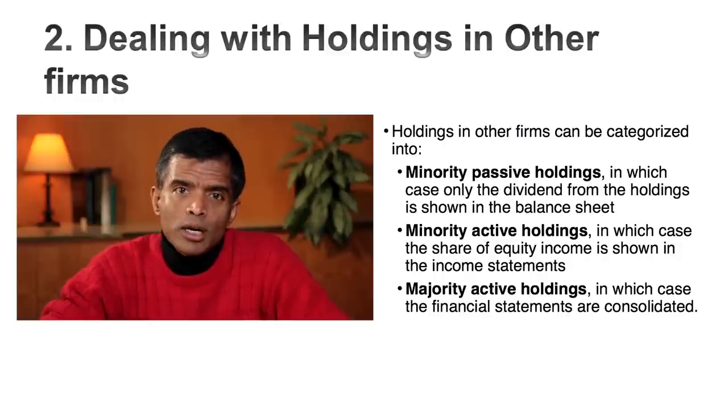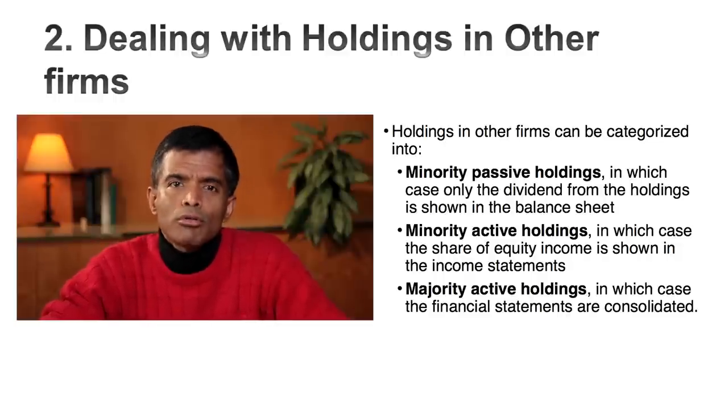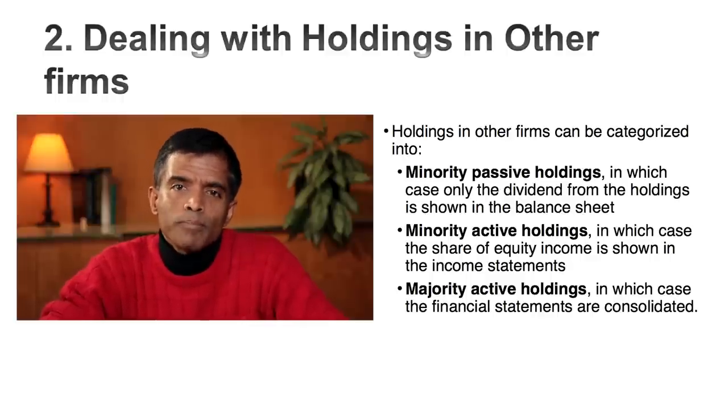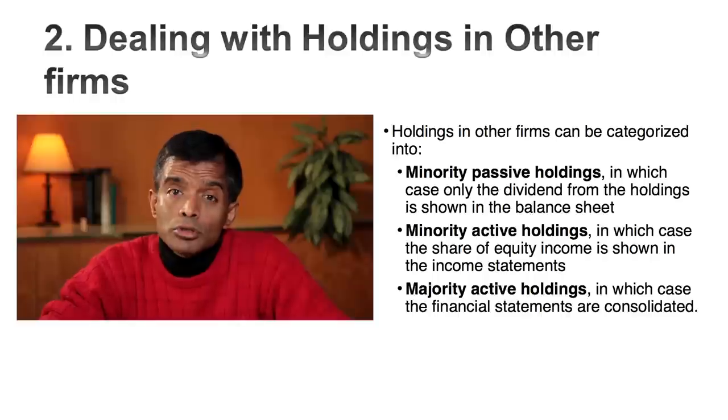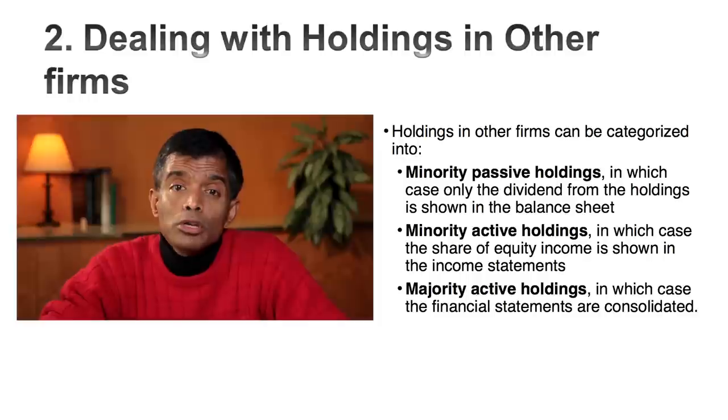Cross holdings are what I call the black hole of valuation — the thing I most detest in valuation. The accounting for cross holdings is all over the place. In US accounting there are three ways a cross holding can be accounted for. If you own a small piece — three to five percent — and take no role in running the company, the holding is classified as a minority passive investment. On the income statement you show dividends received; on the balance sheet you show your original investment.